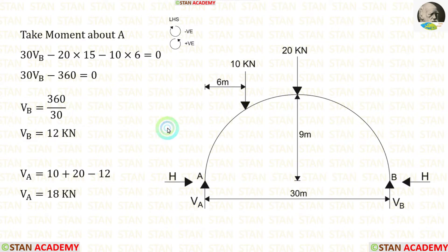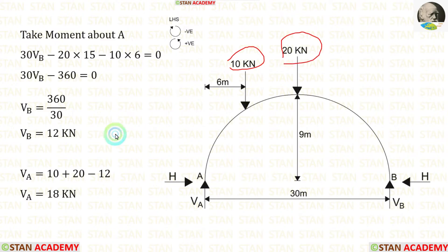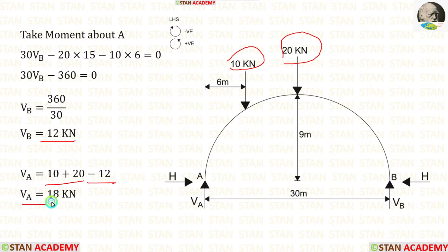Now we can easily calculate VA by taking the total load. In this arch there are two loads: 10 kilo Newton and 20 kilo Newton. When we add them, we get 30. So VA equals 30 minus VB, which gives VA equal to 18 kilo Newton.